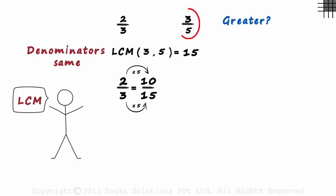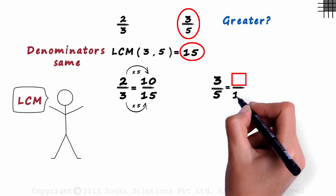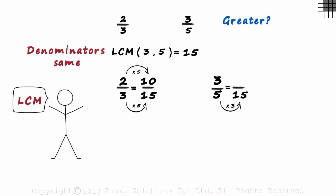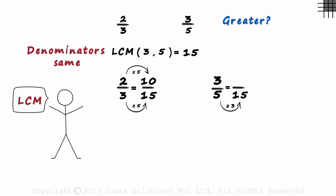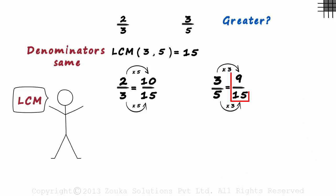Similarly, the second ratio also has to be written with 15 as a denominator. 3 by 5 equals something over 15. We have to multiply 5 with 3 to get 15. Hence, we also multiply 3 with 3 to get 9 by 15 as our second ratio. Now we have the same denominator in each case.